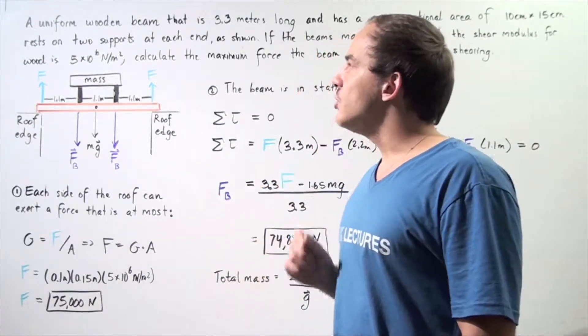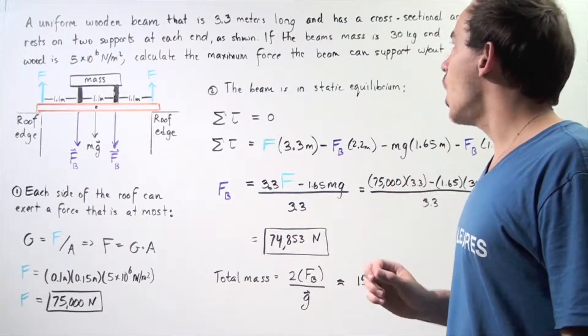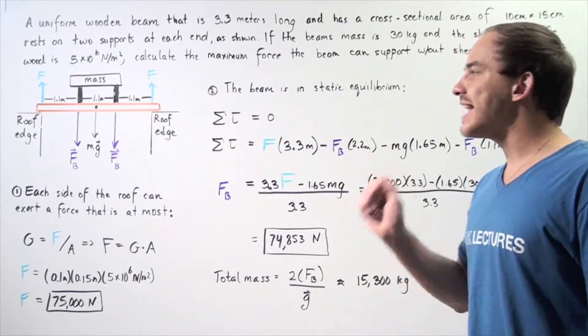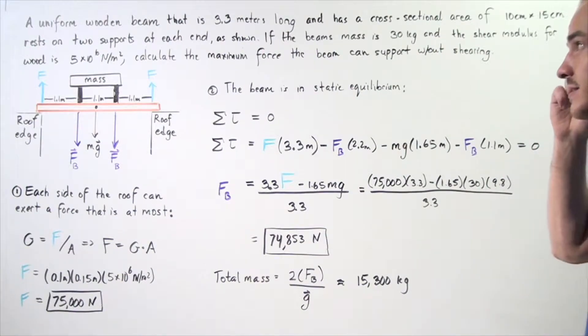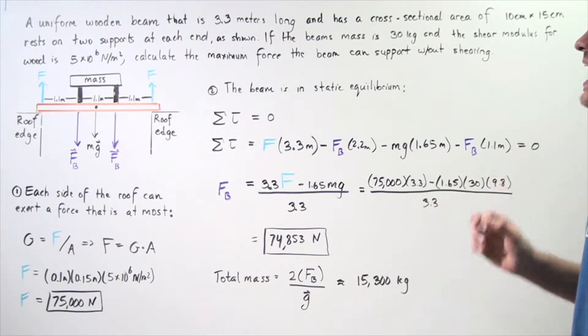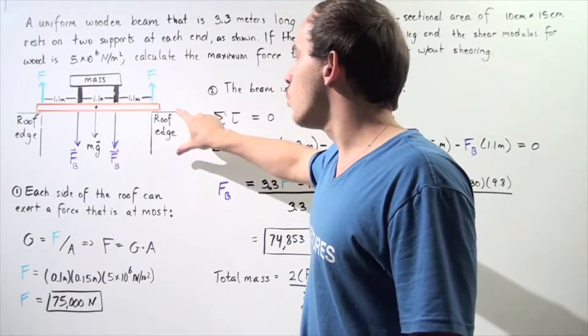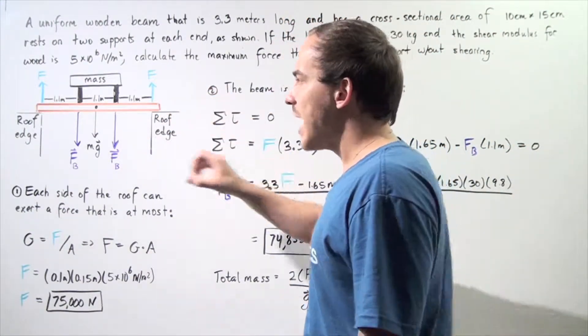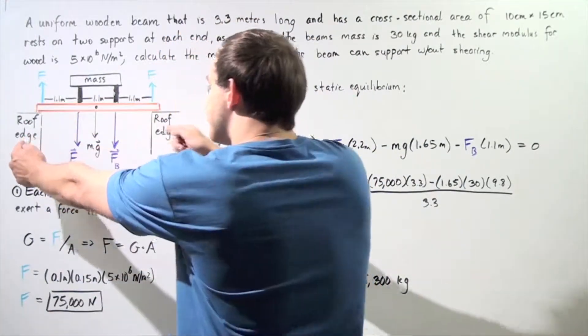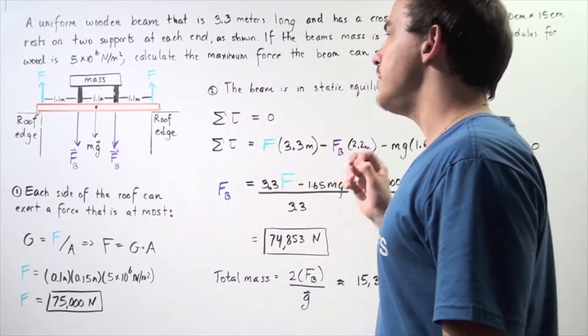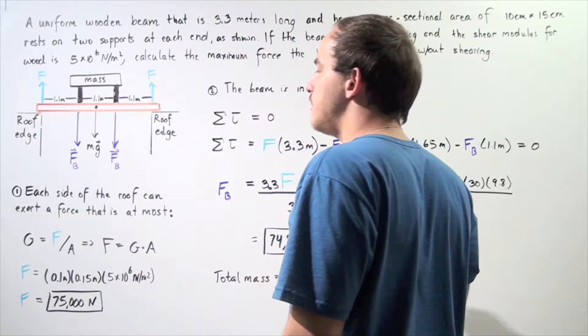Let's suppose that a uniform wooden beam that is 3.3 meters long and has a cross-sectional area of 10 centimeters times 15 centimeters rests on two supports at each end as shown. So we have support system number one, one roof edge, and support system number two, a second roof edge, and the distance is 3.3 meters long.